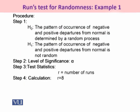And now, in order to test that whether this data is showing any departure from normality, we are required to make up the pair of hypotheses. So under H0, we consider that the pattern of occurrence of negative and positive departures from the normal is determined by a random process. Whereas under alternative hypothesis, we state that departure from normal is actually not the part of the random process.